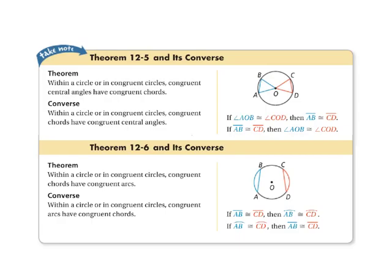Theorem 12-15 states that within a circle or in congruent circles, congruent central angles have congruent chords. So, if angle AOB is congruent to angle COD, then segment AB is congruent to segment CD. Its converse states that within a circle or in congruent circles, congruent chords have congruent central angles. So, if segment AB is congruent to segment CD, then angle BOA is congruent to angle COD.